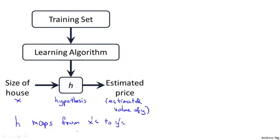People often ask me, why is this function called a hypothesis? Some of you may know the meaning of the term hypothesis from the dictionary or from science or whatever. It turns out that in machine learning, this is a name that was used in the early days of machine learning, and it kind of stuck. Maybe not a great name for this sort of function for mapping from sizes of houses to the predictions. I think the term hypothesis maybe isn't the best possible name for this, but it's the standard terminology that people use in machine learning now. So don't worry too much about why people call it that.